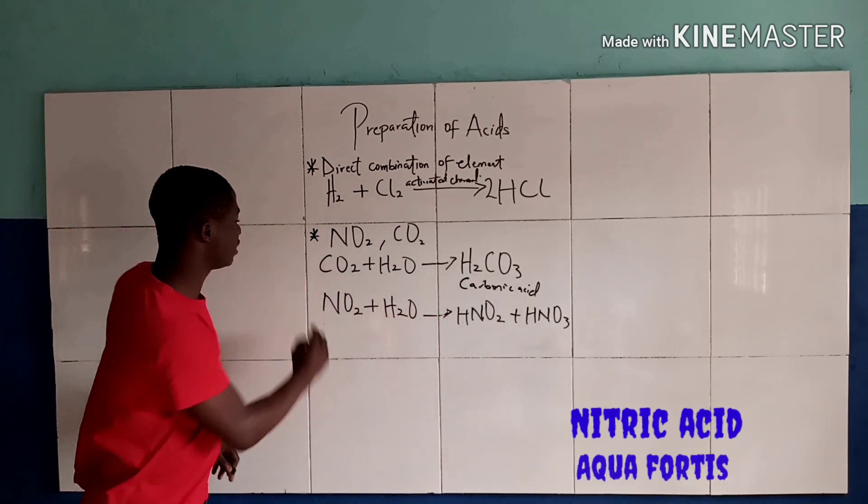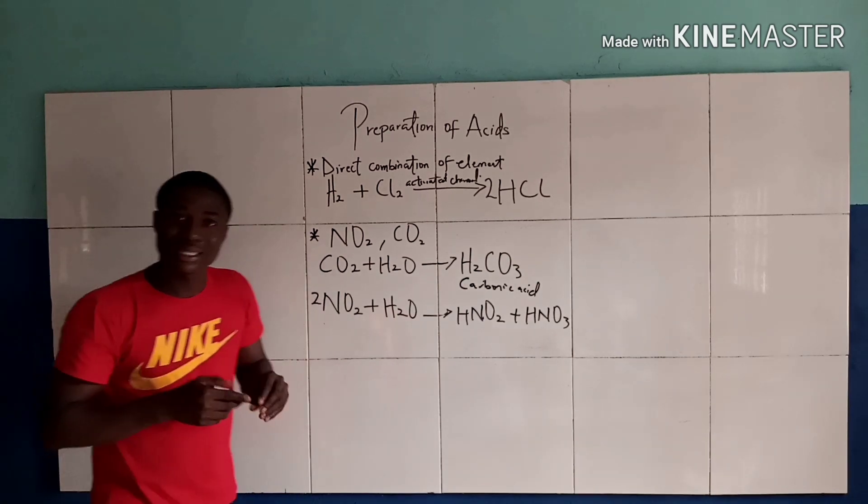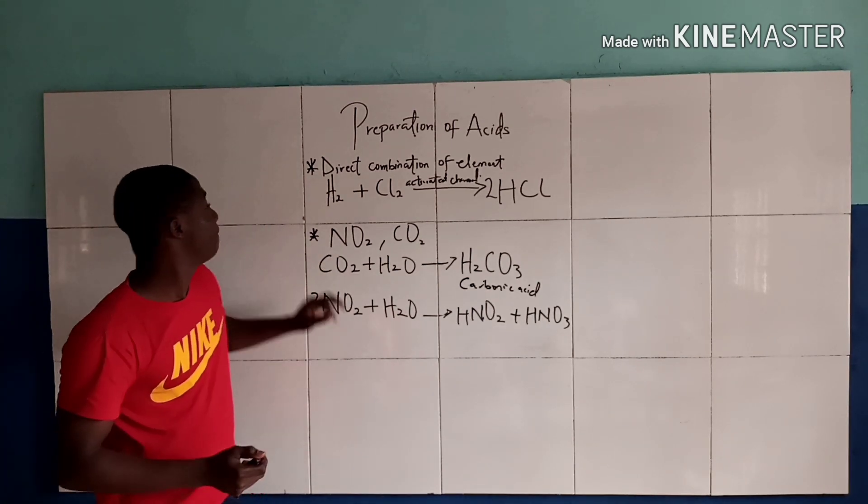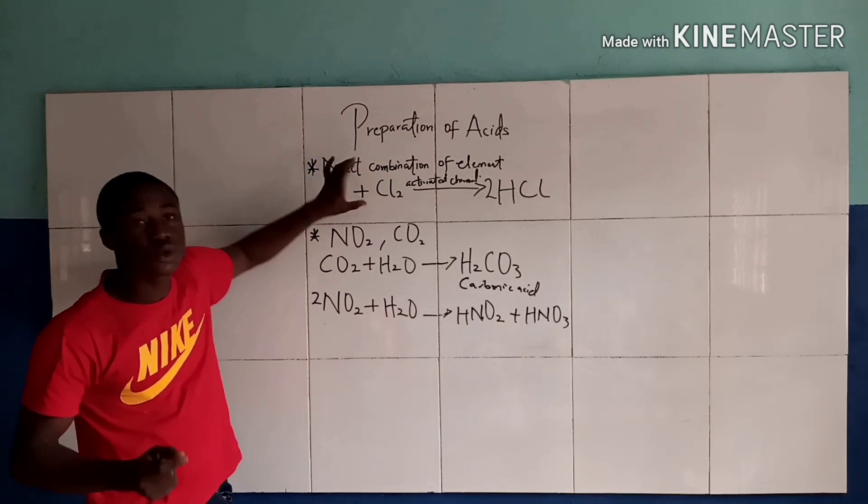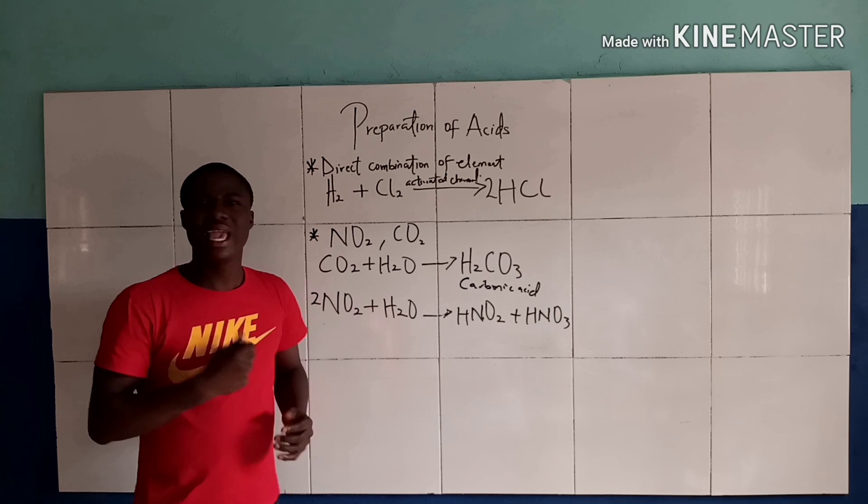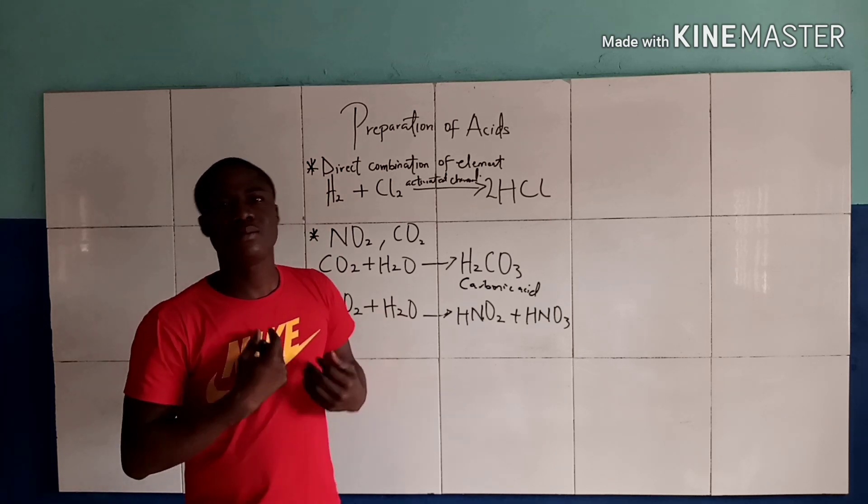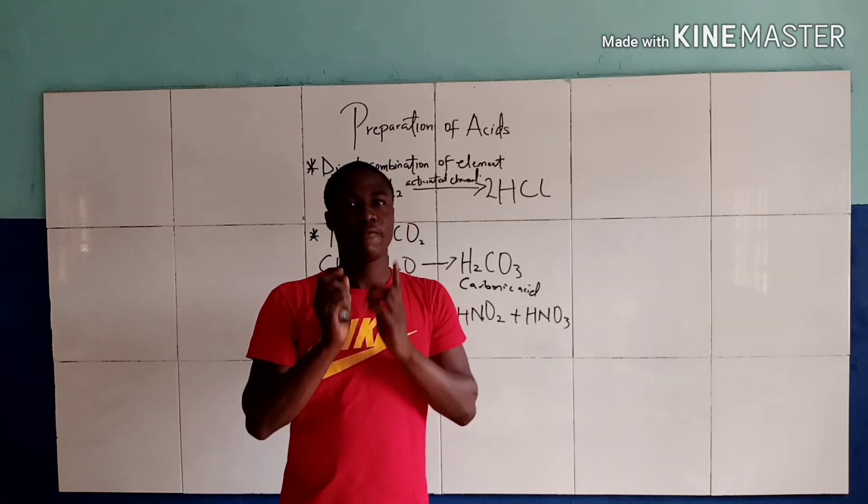So an acid can be formed by dissolving an acid anhydride in water and also by direct combination of the elements. My name is Brett Edo and thanks for watching.